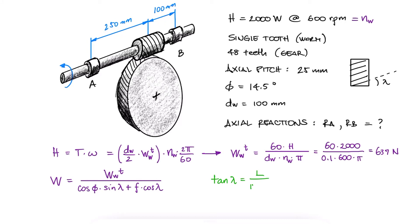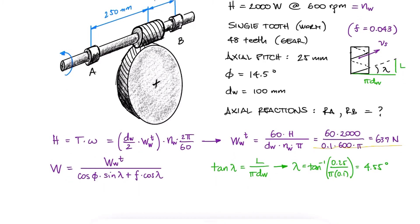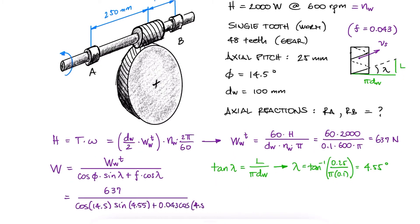Tangent of lambda will be equal to the lead divided by the circumference, and with the lead being equal to the axial pitch, the axial distance between threads, we find the lead angle lambda. With a friction coefficient of 0.043 that we can calculate with the sliding velocity, more on that later, we can find the total interaction force W.